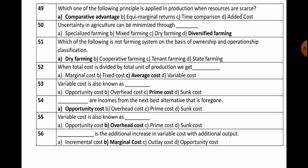Question number 54: Opportunity costs are incomes from the next best alternative that is foregone.